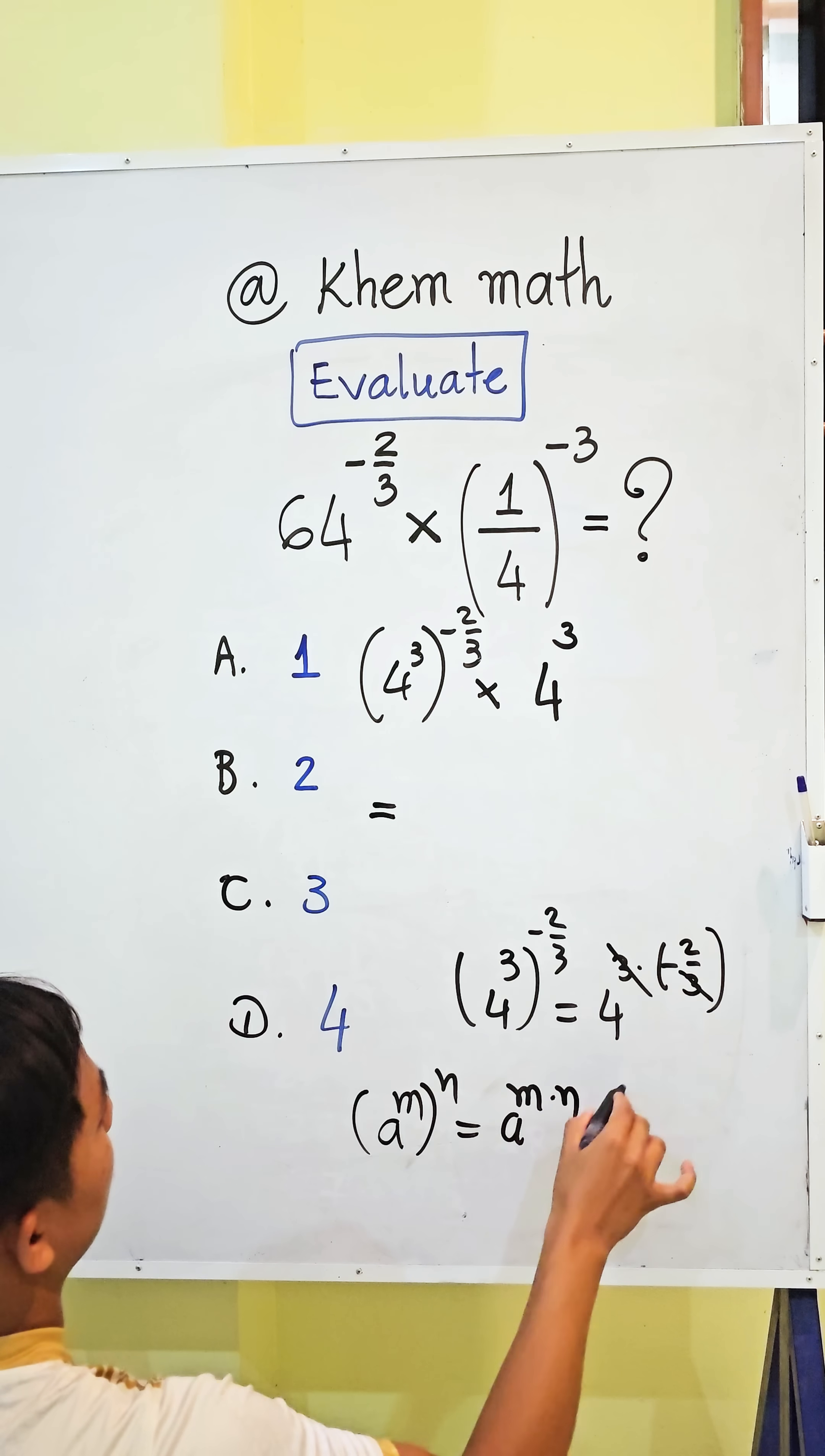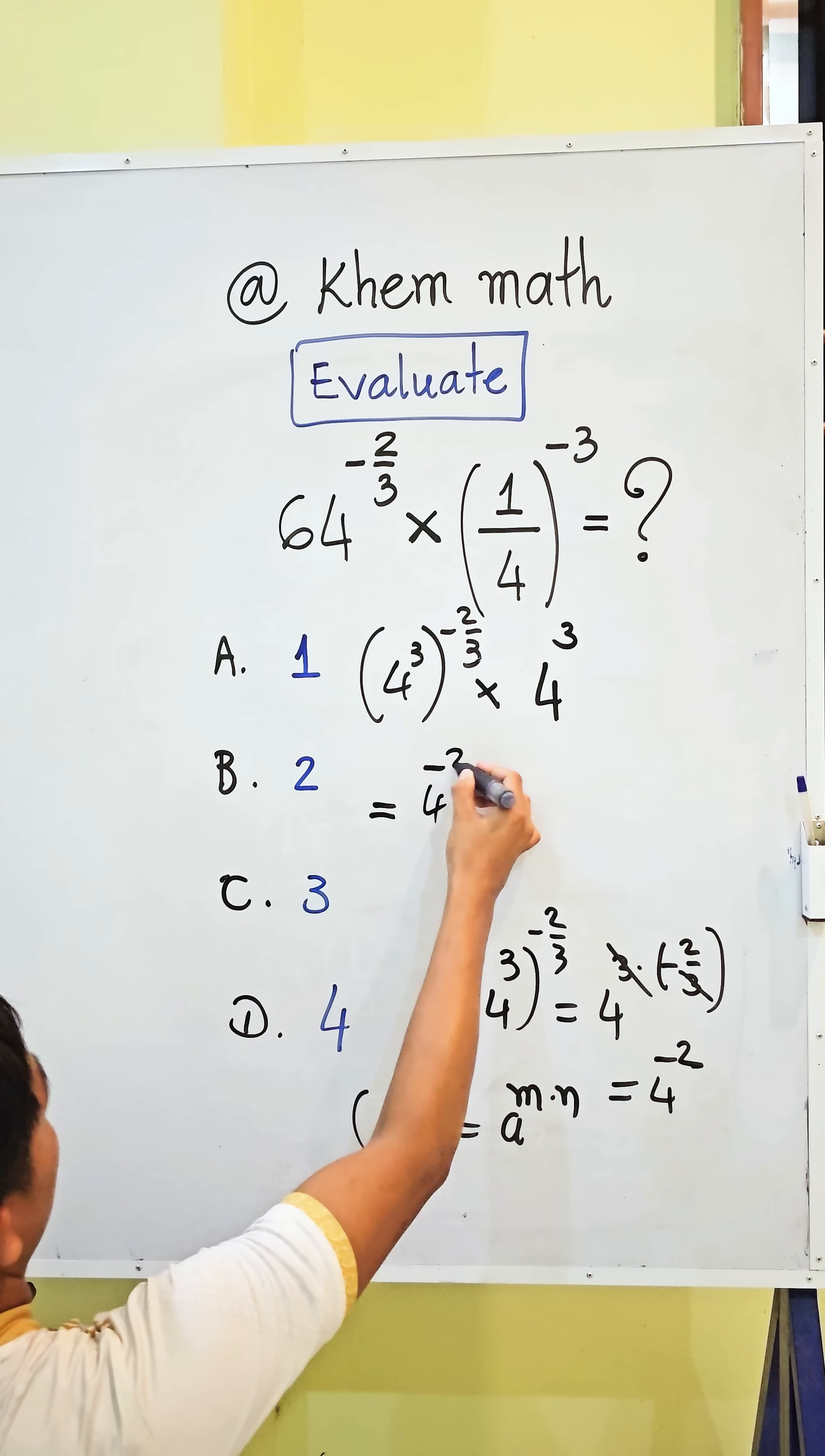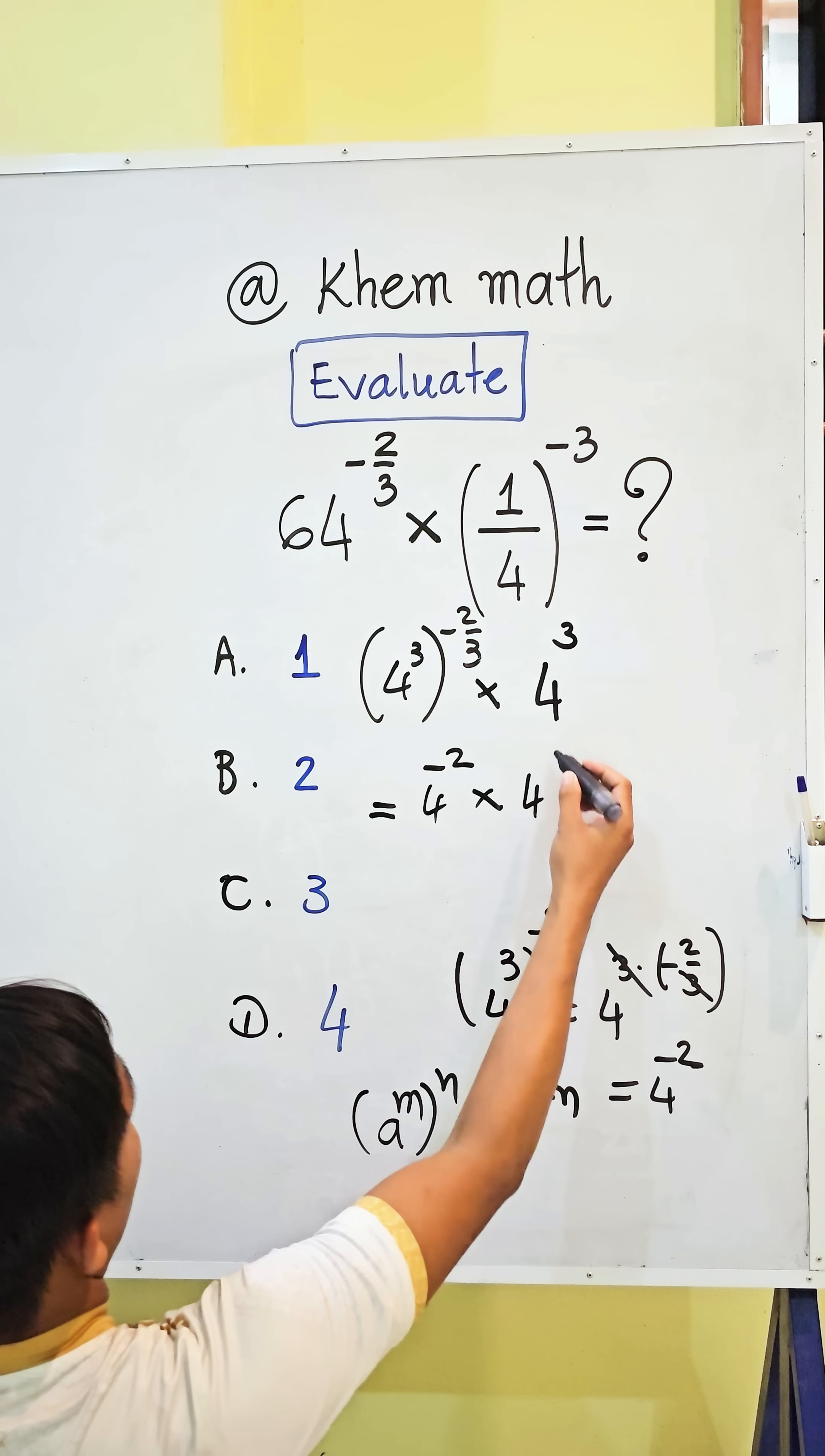So we simplify 3, we get 4 power negative 2. So here we get this 4 power negative 2 and times here power 3.